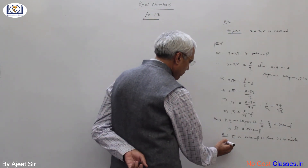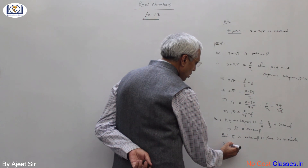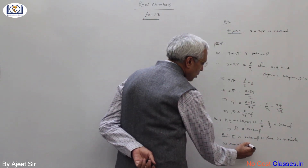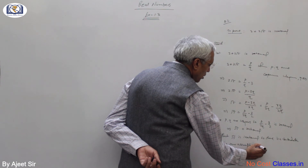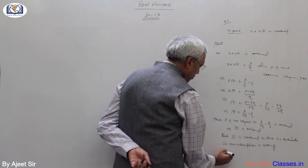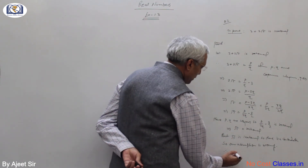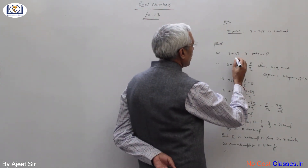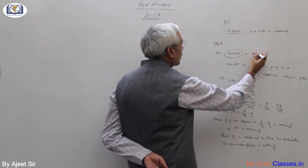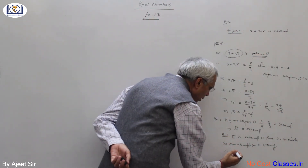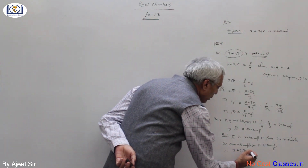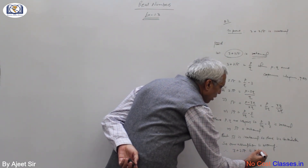But root 5 is irrational, so there is a contradiction. Our assumption is wrong, and therefore 3 plus 2 root 5 is irrational.